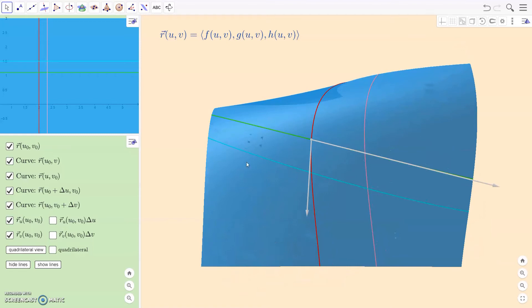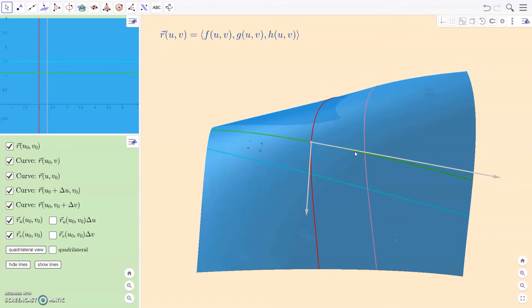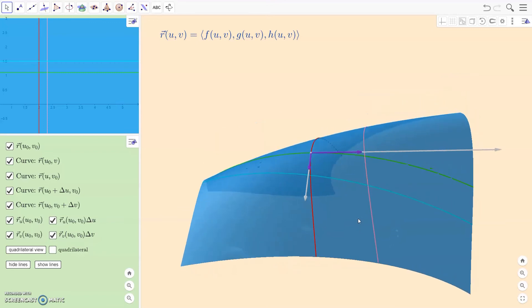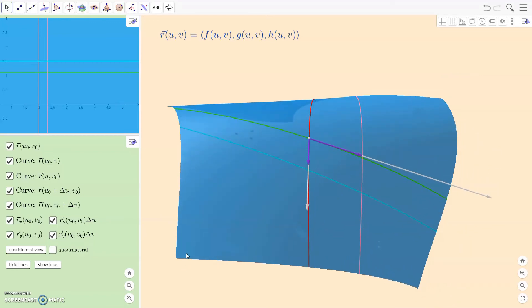Now those vectors are longer than they should be if I'm trying to represent just a little step ahead by a delta U amount and a delta V amount. Well, because those vectors are more like velocity vectors, I have to convert them into displacement vectors by multiplying by the parameter changes. A delta U times the one vector will give me this purple vector, which actually does correspond to just the step ahead by a delta U.